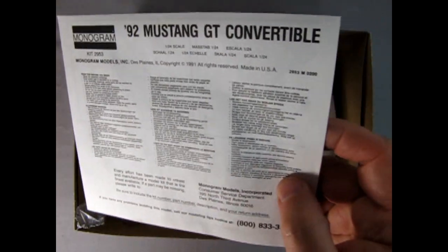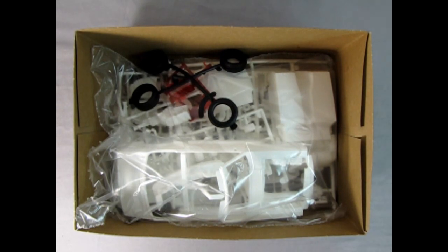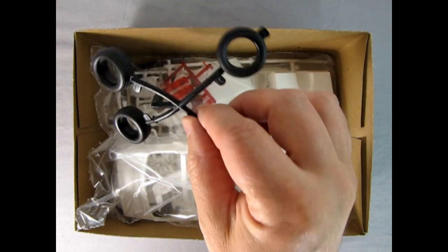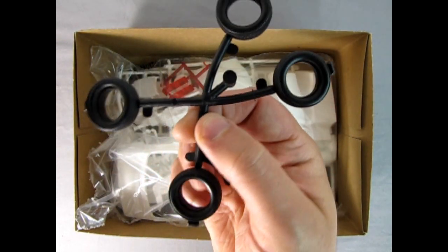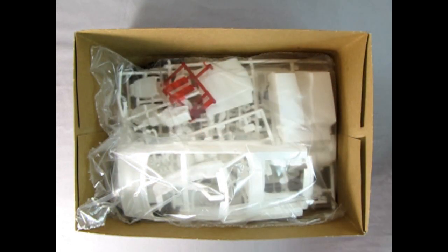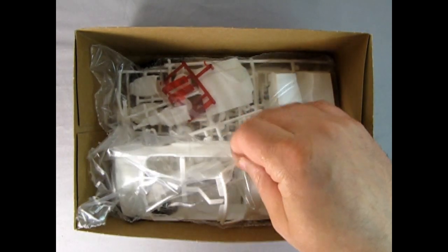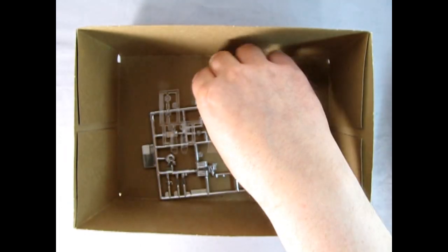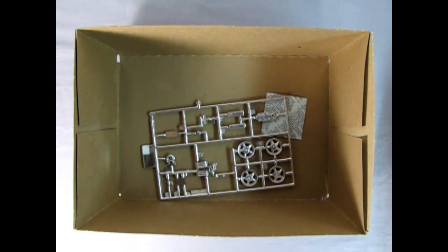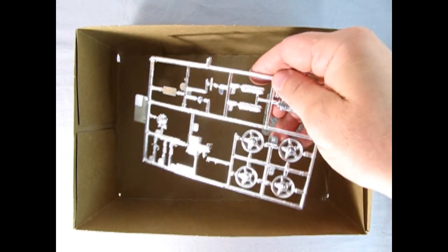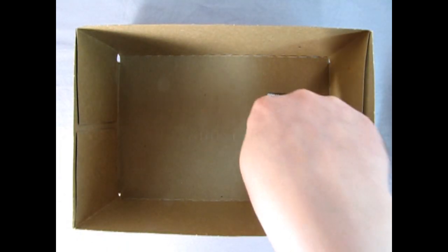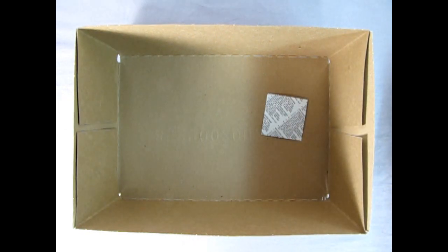All right, now here we have our instruction sheet, which Danny the dog will take a look at in a minute. We've got these wonderful tires. We'll have to clip off the parts tree and clean them up in the future. Then we've got our white plastic here with the red taillights in the bag as well. We've got our glass down below and then our awesome chrome parts tree. And there's our decals, which again, Danny the dog will reveal at the end of this video.